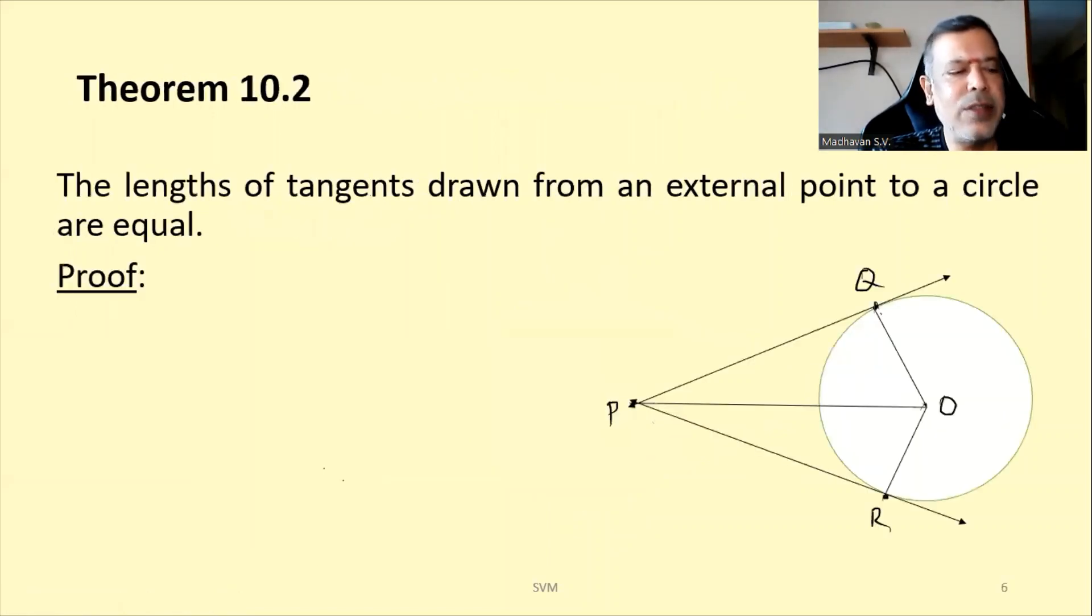Let us go to the next theorem, theorem 10.2. The theorem is the lengths of tangents drawn from an external point to a circle are equal. P is the external point. From here, you are drawing two tangents. We need to prove that PQ is equal to PR. That is what we have to prove. Now, if we join this, after we draw this, we are joining all this means PO, OQ and OR, all these things are joined.